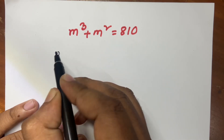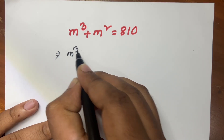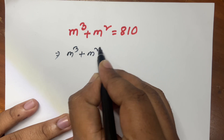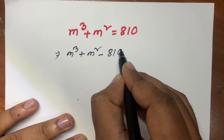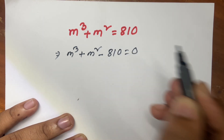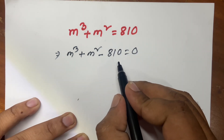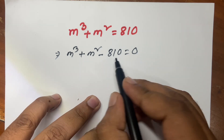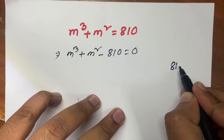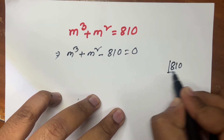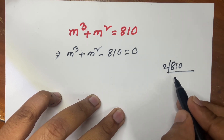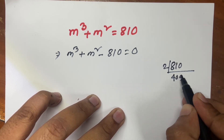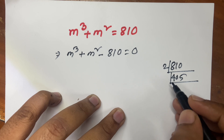I can say: m cubed plus m squared minus 810 equals 0. Now I simplify 810. If I divide by 2, I get 405. If I divide by 5, I continue factoring.